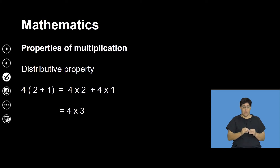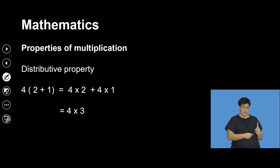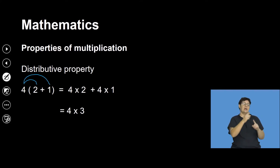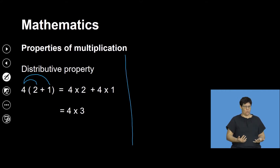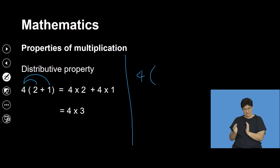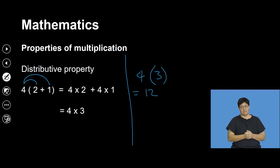With the distributive property, this has to do with taking a number outside the bracket and multiplying it throughout all the terms inside the bracket. So it's going to be 4 multiplied by 2, and then 4 multiplied by 1. Before we do that, let's look at how you would do this using BODMAS, because remember, everything to do with numbers is governed by BODMAS. BODMAS says work out what is inside the bracket: 2 plus 1 is 3, therefore 4 multiplied by 3 gives 12.